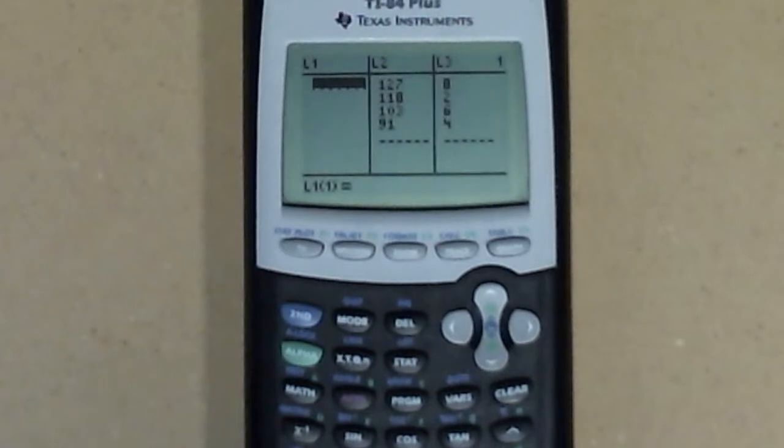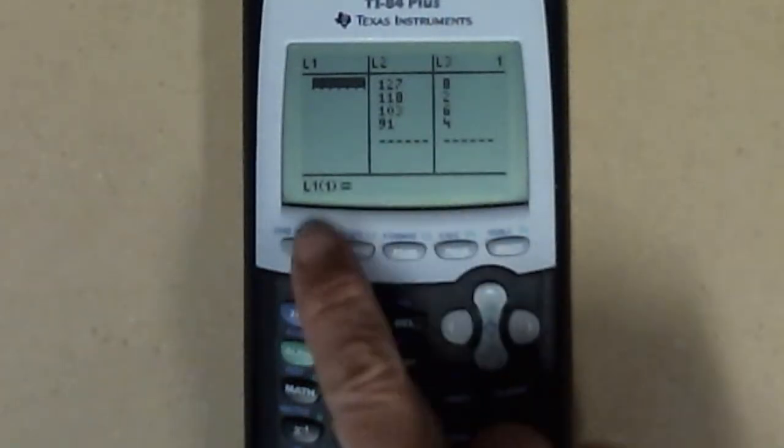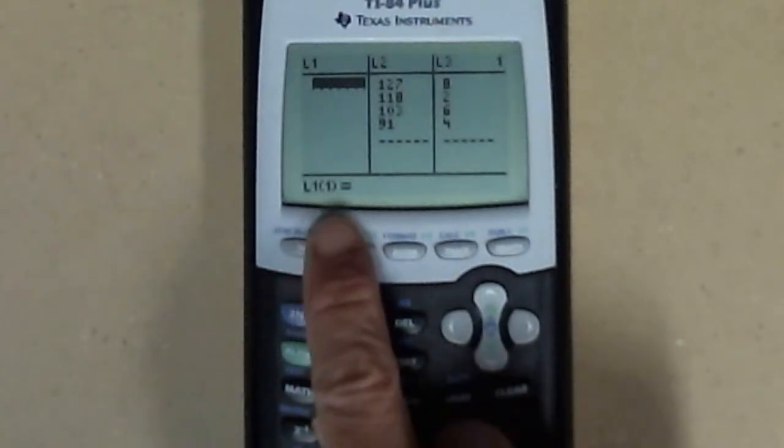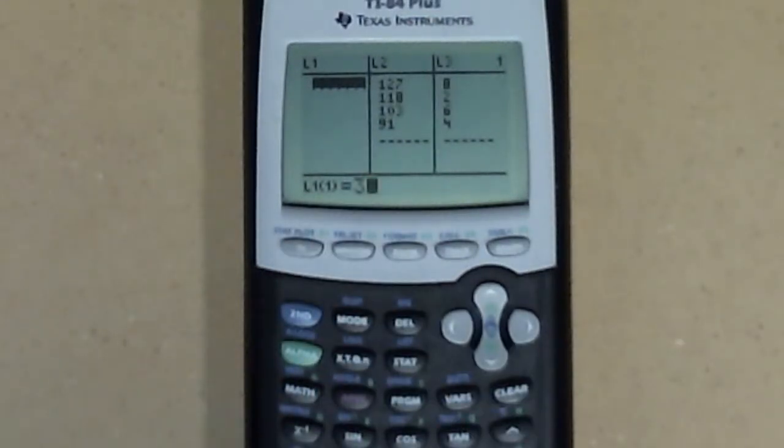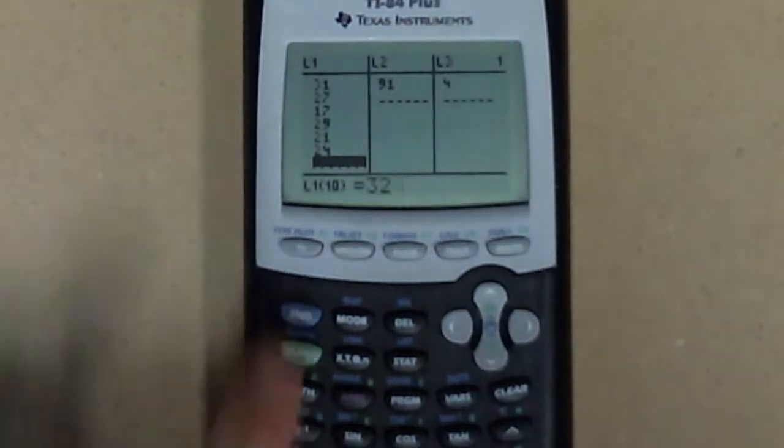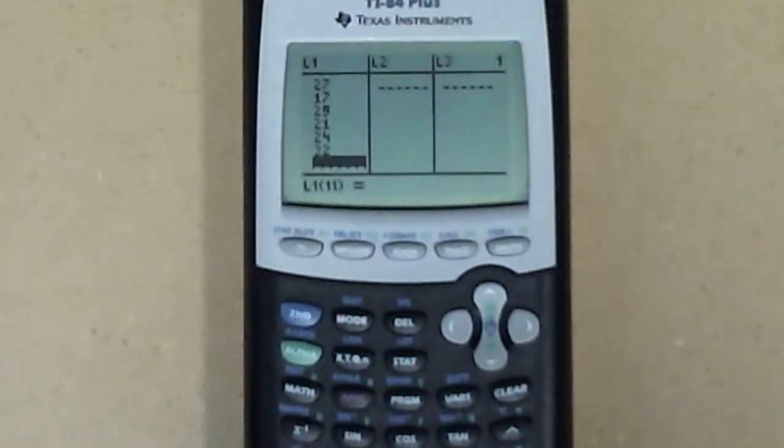Punch in the numbers and hit enter and it'll bring you down to the next one. You'll also notice at the bottom it'll tell you list one, the first data value, so we can keep track and make sure we didn't lose something. So 34, 21, 31, 31, 27, 17, 29, 21, 24, 32. L10, right? I had 10 values. Perfect.